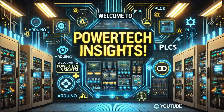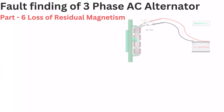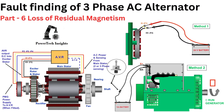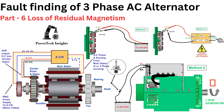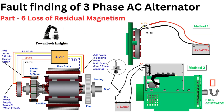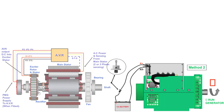Welcome to Powertech Insights. In this tutorial, I will provide a comprehensive guide on fault finding and troubleshooting for a three-phase AC generator alternator — specifically, the loss of residual magnetism. Let's get started.